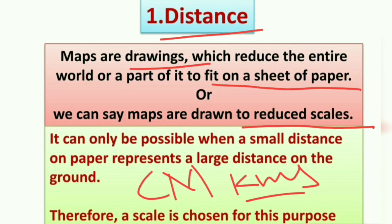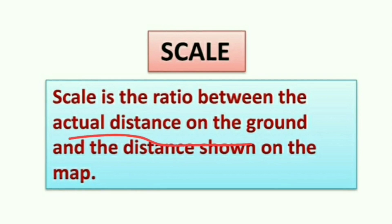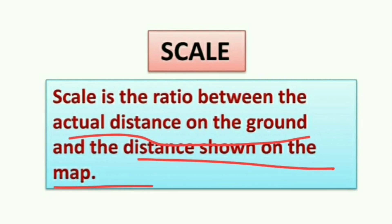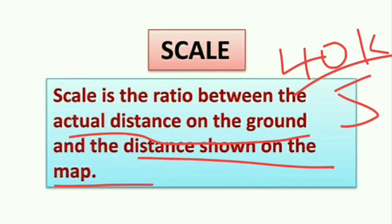Maps are drawn to reduced scales because in reality the distance on the ground is large, and to show that large distance on paper the distance must be reduced. For this purpose we need a scale. Scale is the ratio between the actual distance on the ground and the distance shown on the map. For example, suppose the actual distance between your school and home is 40 kilometers, but we show it on the map as 5 centimeters.